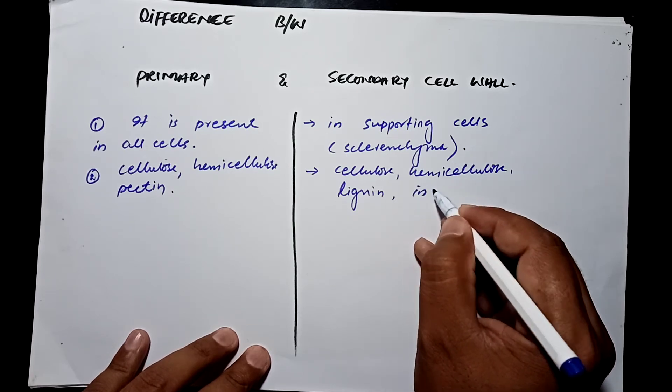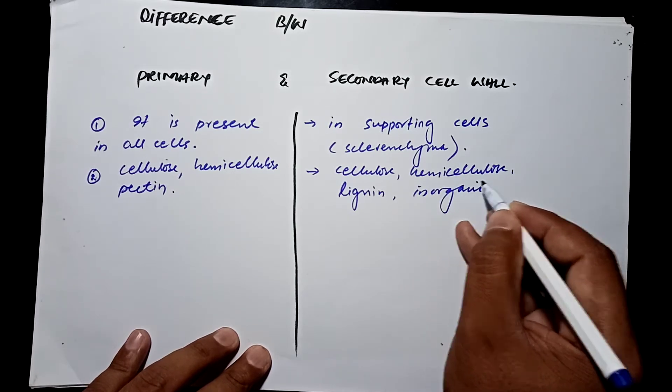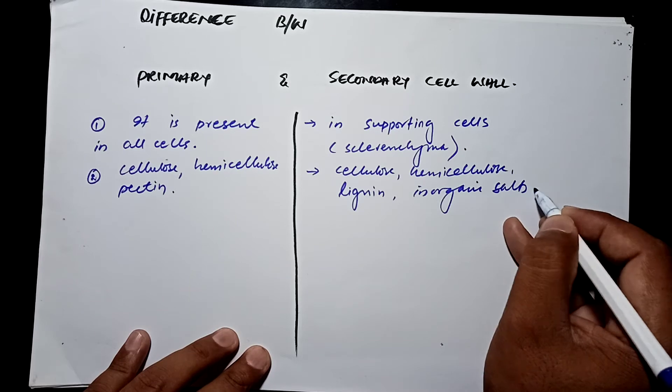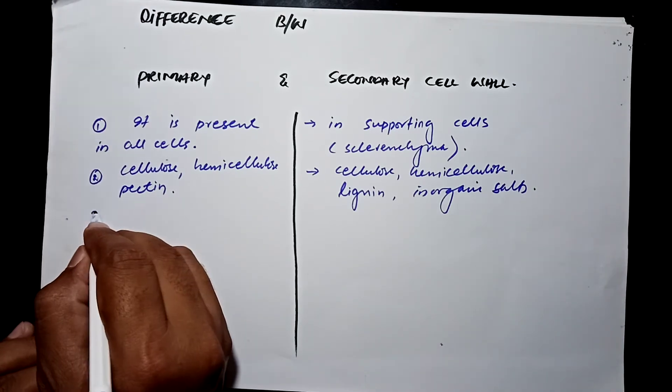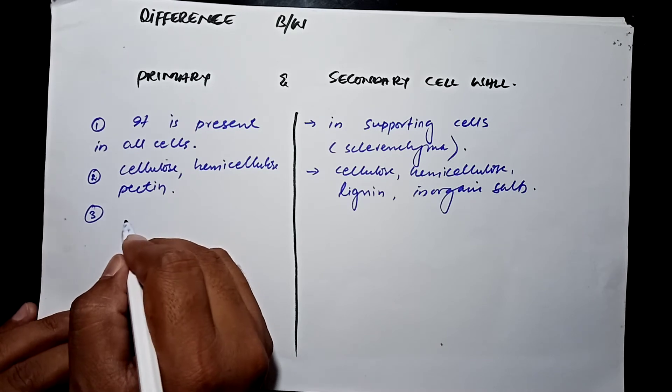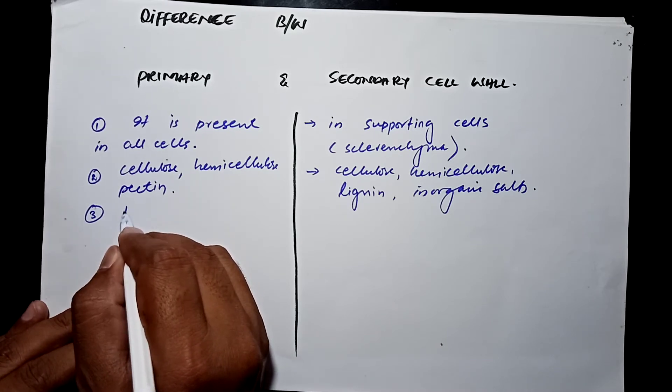This is the composition of the primary and secondary cell wall. Primary cell wall is flexible.